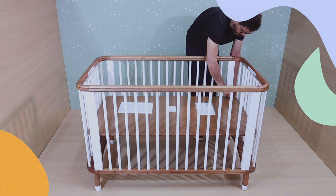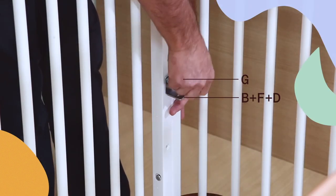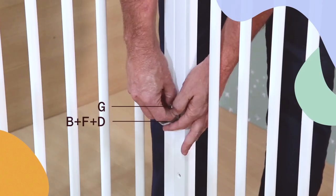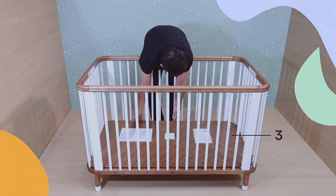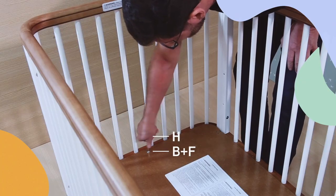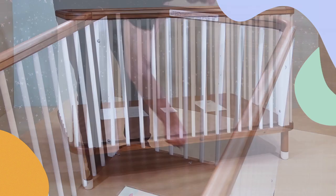To lower the mattress support to the lowest height, remove the mattress support, then the bolts and washers, including the mattress support bolts D. Then place the mattress support directly at the base of the Crib and secure it using bolt B, washer F and the Allen wrench.